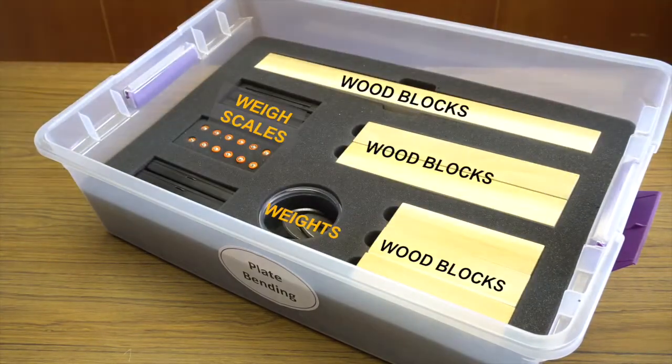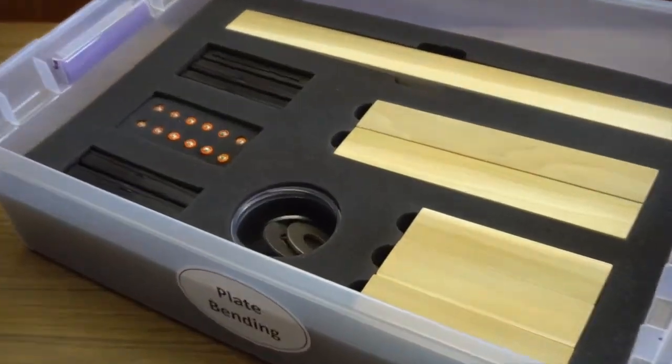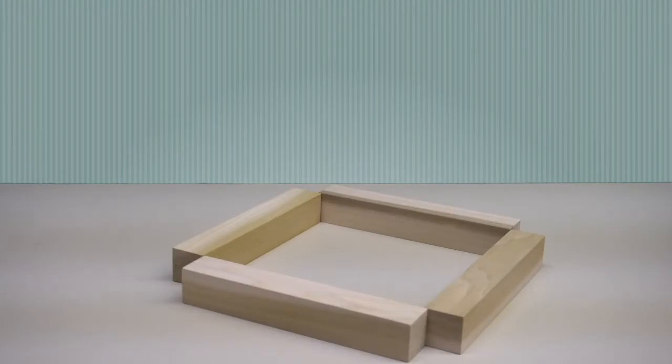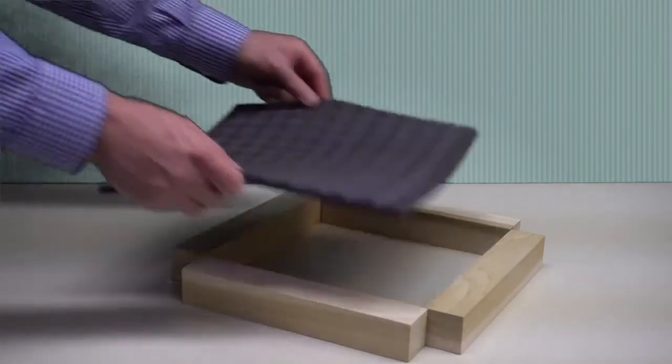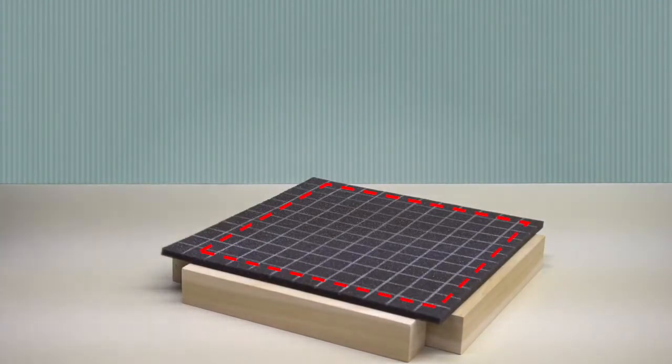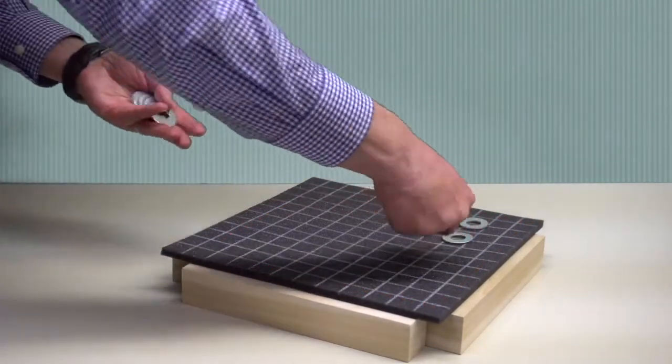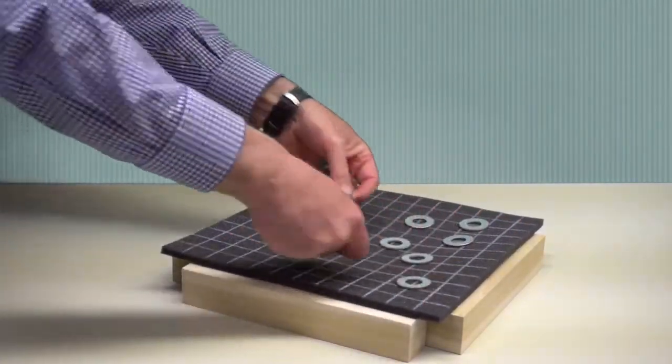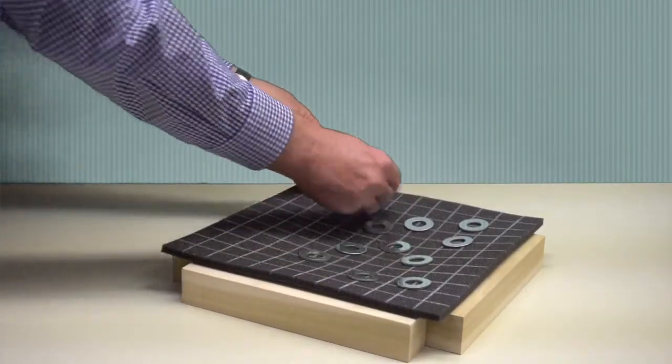We designed this model to help students better understand plate deflection. Let's use it to investigate a square plate with simple supports, as indicated by these dashed lines. The white grid makes it easy to see the shape that the plate will take as it is loaded.